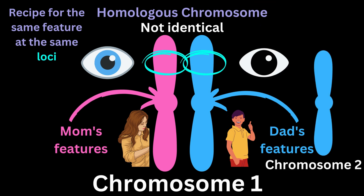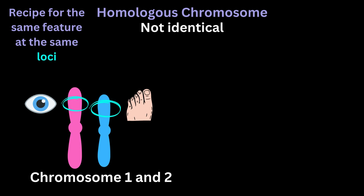Now if we look at a chromosome that is not homologous to the maternal chromosome — say this is chromosome number 2 from the paternal side — if I look at a similar loci, that locus is not coding for eye color. Rather it is coding for the shape of my toenails. Chromosome 1 and chromosome 2 are called non-homologous chromosomes because they don't have the recipe for the same part at the same loci.